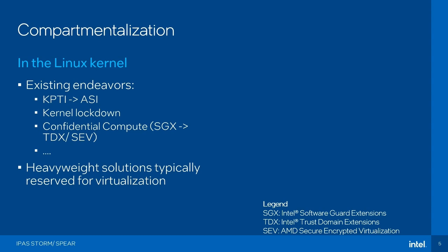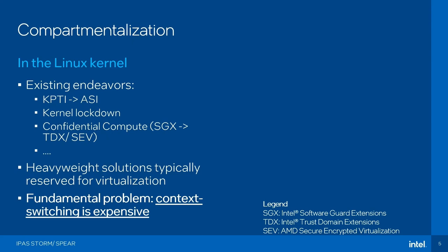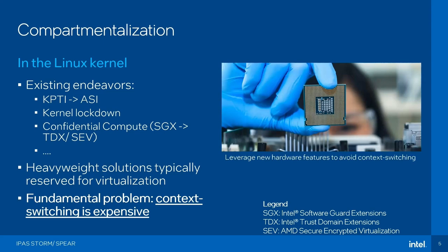Many of these are quite heavyweight and typically reserved for virtualization, where you enter and exit the virtual machine, which is already quite expensive. You typically need to switch address spaces, which is quite expensive, but if it doesn't happen all too often, the overhead is acceptable. But suppose you want to do this inside the kernel for smaller domains — the overhead of context switching and switching address spaces becomes quite significant. What I want to do is propose leveraging some new hardware features to achieve something similar to KPTI or ASI, but much more lightweight.